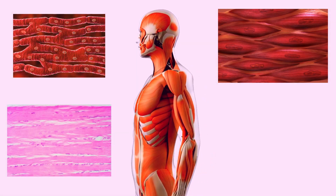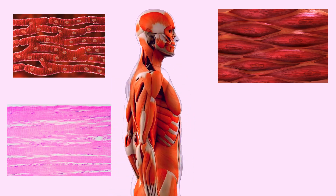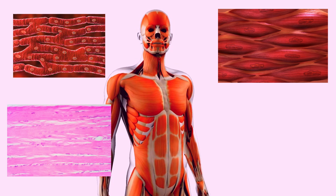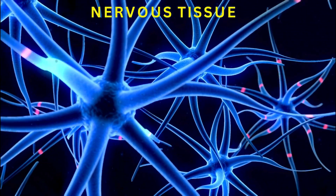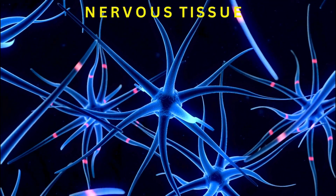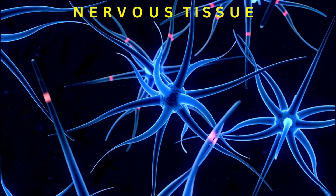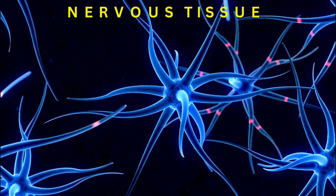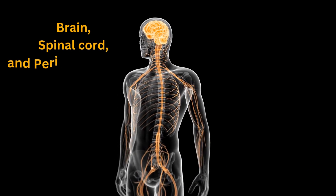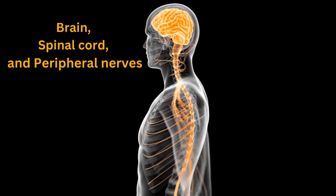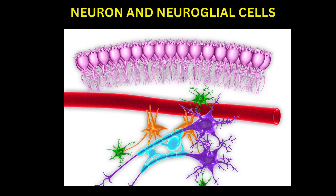These three types of muscle tissue play crucial roles in maintaining body structure, supporting movement, and facilitating various physiological processes. Nervous tissue is a specialized tissue in the human body responsible for transmitting electrical impulses and coordinating the body's responses to internal and external stimuli. It is a crucial component of the nervous system, which includes the brain, spinal cord, and peripheral nerves. There are two main types of cells in nervous tissue: neurons, or nerve cells, and neuroglial cells.